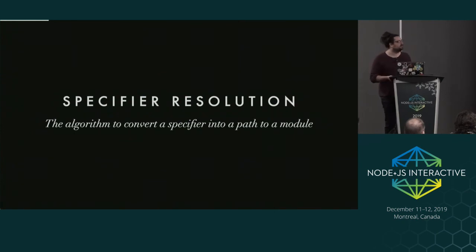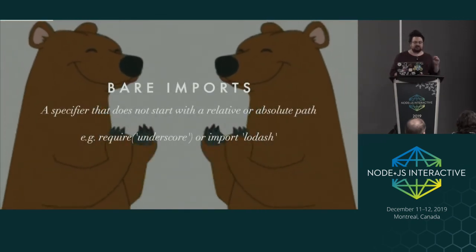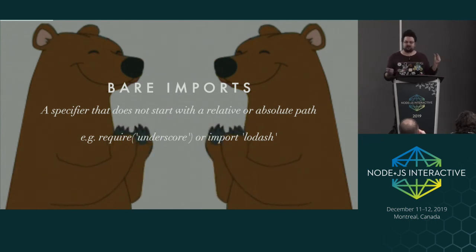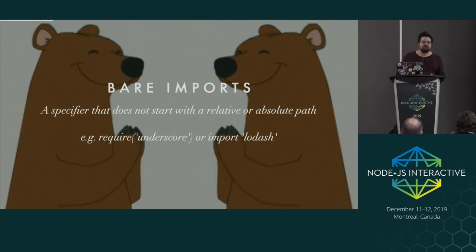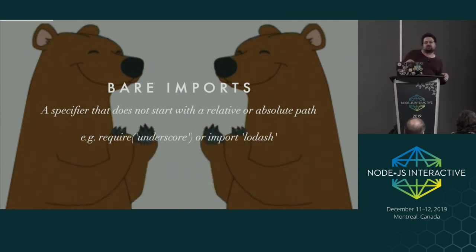Specifier resolution is an algorithm used to convert a specifier into the path of a module. So when we see something like './...', how do we figure out what that is? If in Node we don't include the .js, how do we figure that out? That's the specifier resolution. Bare imports is a specifier that does not start with a relative or absolute path - for example, require('_') or import 'lodash' with no dot and no slash. That's called the bare specifier, and that's how we grab things from the node_modules directory. It's a key part of the developer experience because it's really nice not to have to write the full path to everything.